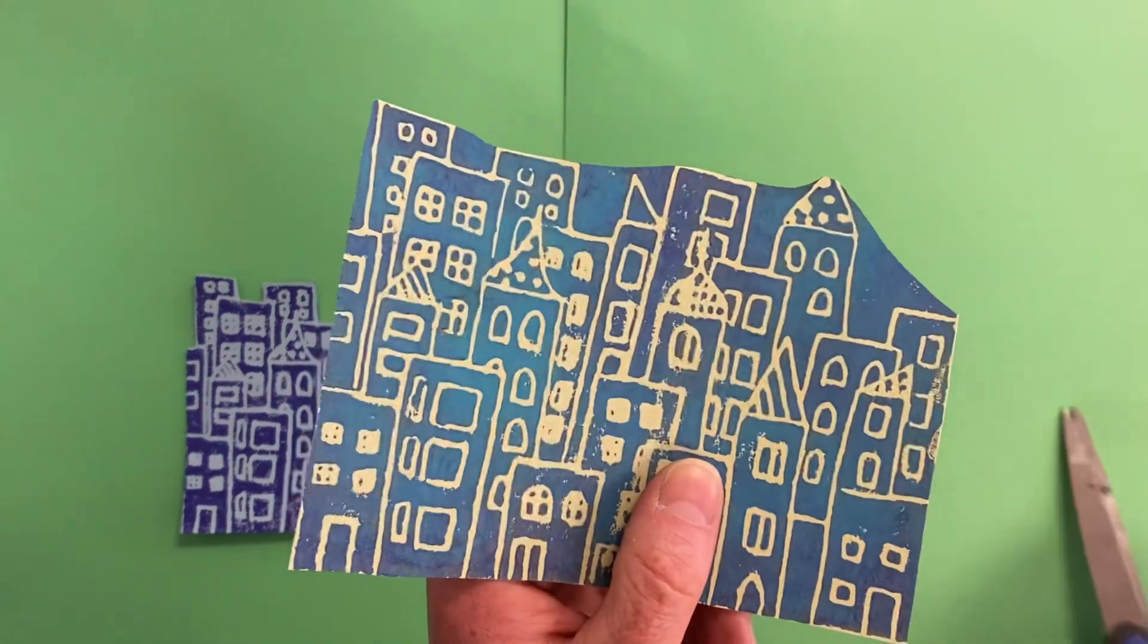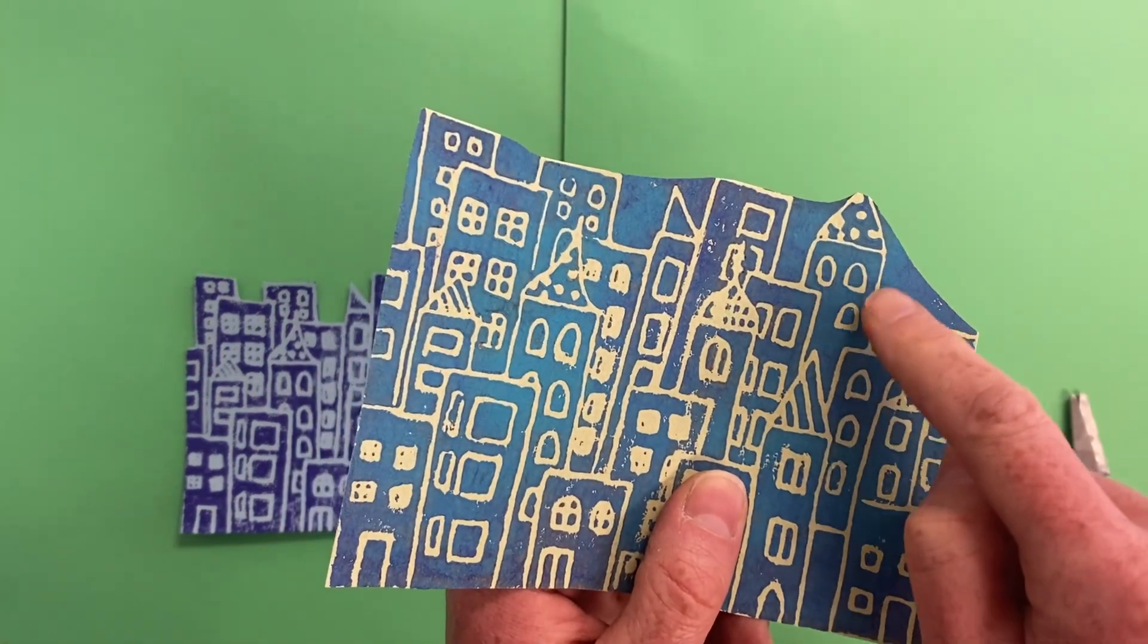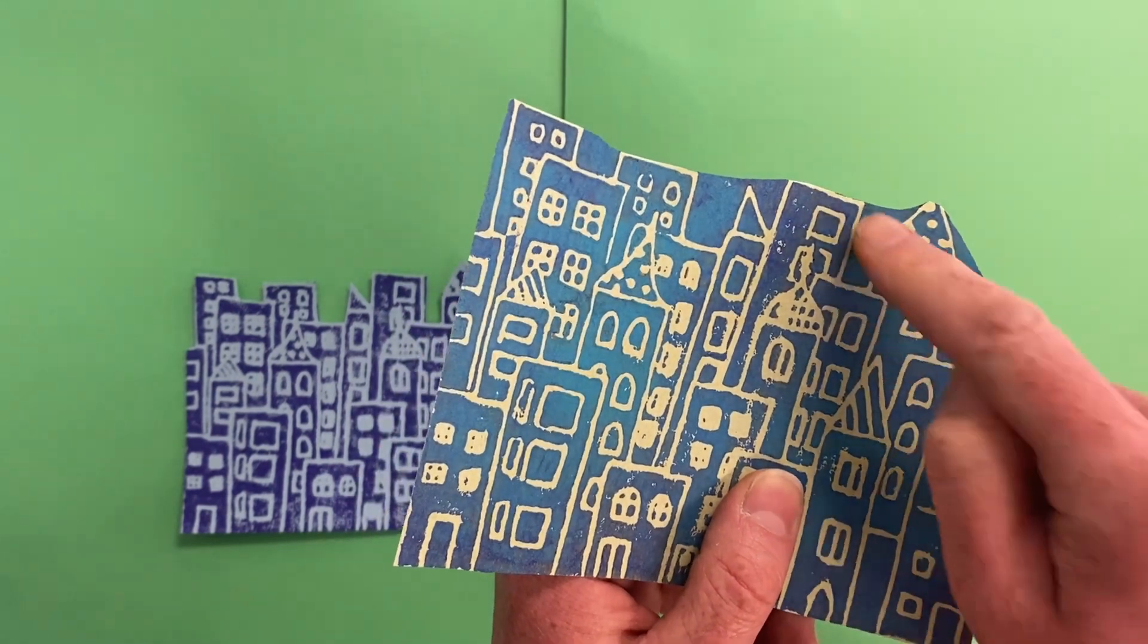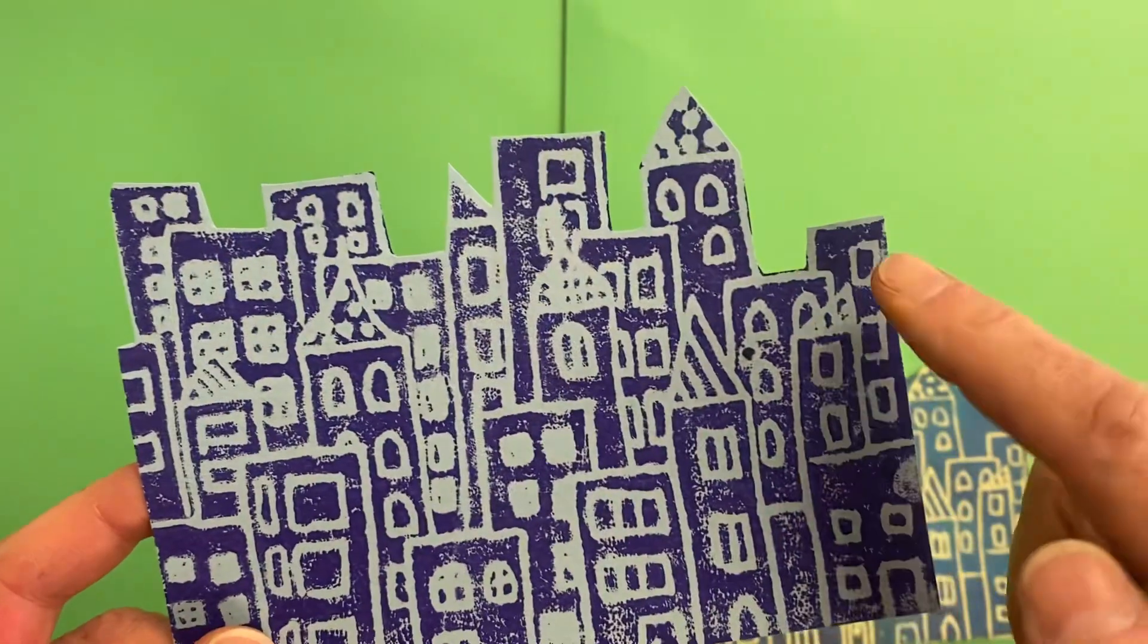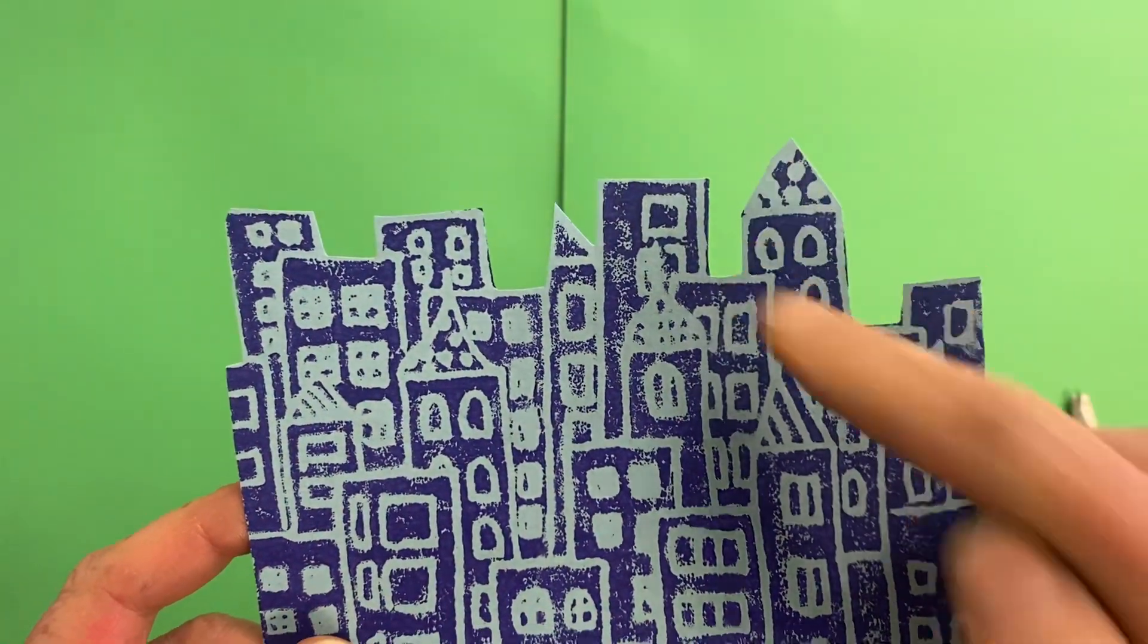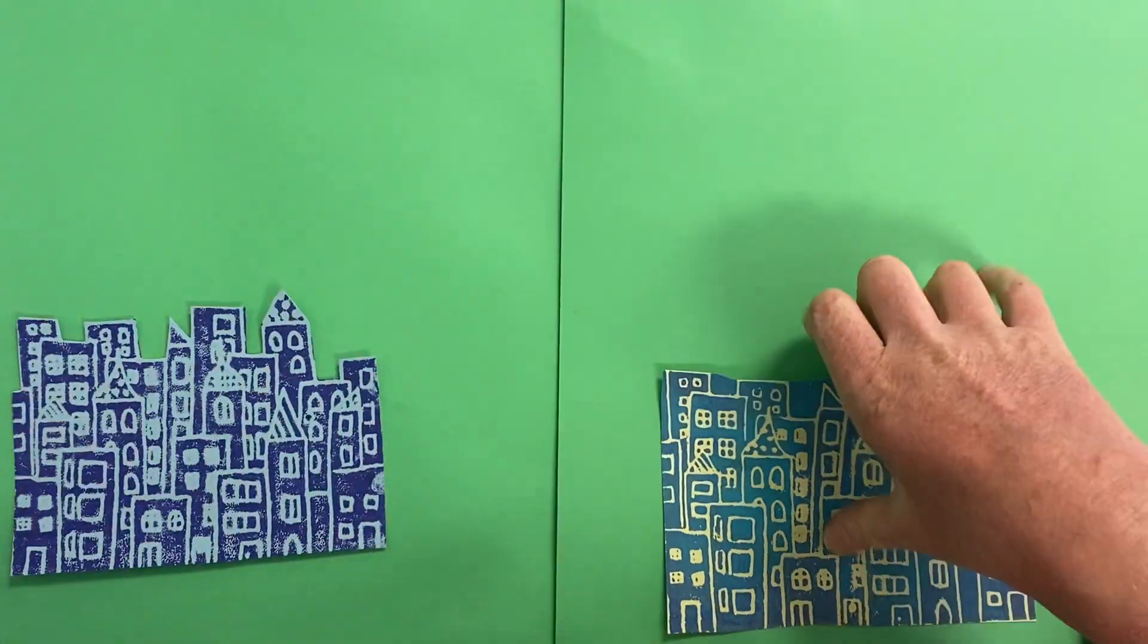And then from that point you're going to cut very carefully along the highest building and cut it out so that you have a very carefully cut skyline. That's very important.